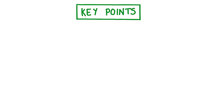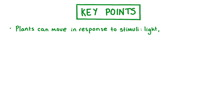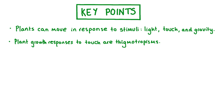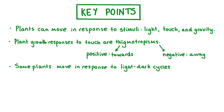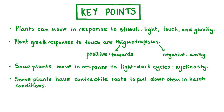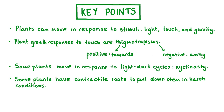Let's review the key points covered in this video. Plants can move in response to a range of stimuli such as light, touch and gravity. A plant's growth movement in response to a touch stimulus is called thigmatropism — positive thigmatropism is movement towards a stimulus, while negative thigmatropism is movement away. Some plants like legumes can move in response to light-dark cycles, called nyctinasty or sleep movement. Plants like corms, bulbs and rosettes have contractile roots that shrink and pull the stem deeper into the soil under harsh conditions. Finally, within plant cells the cytoplasm is in constant rotational motion in a process called cytoplasmic streaming.